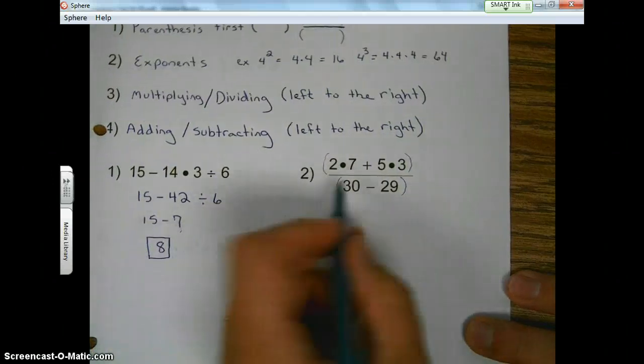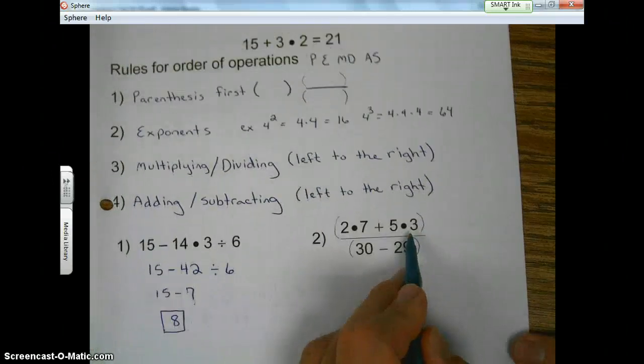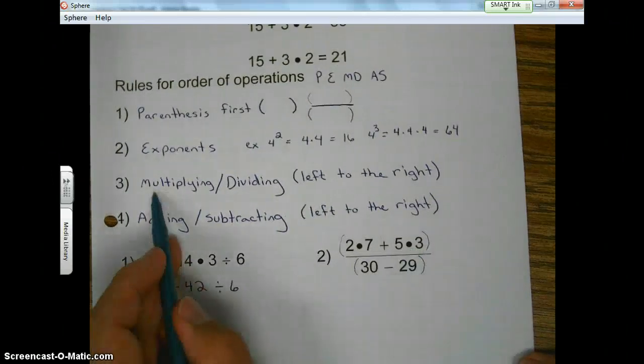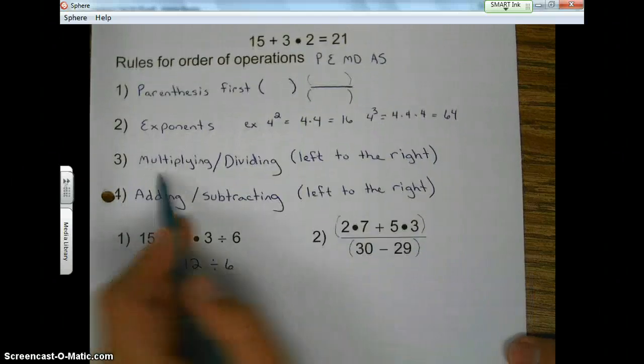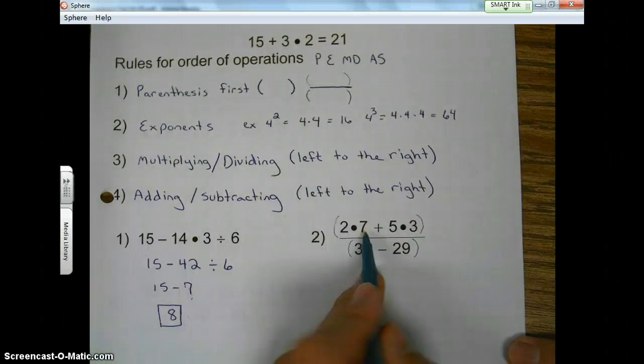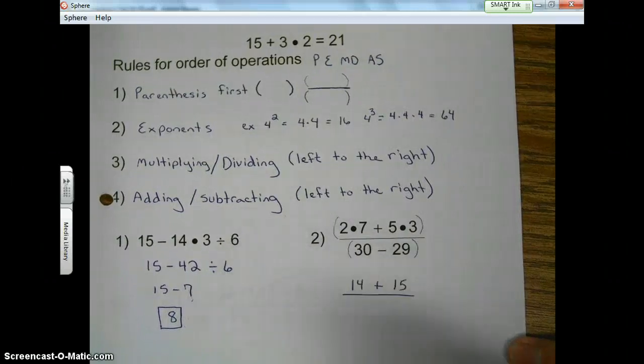Okay? So let's start on the top. So multiply, add, multiply. So looking at our rules, we do multiplying before addition. Okay? Multiplying from left to right, so 2 times 7, 5 times 3.